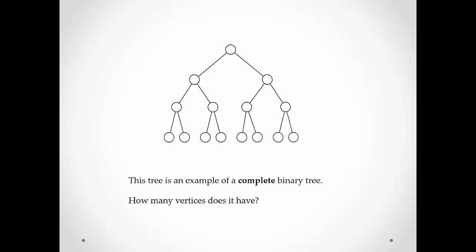Our next example is a complete binary tree. A complete binary tree is a binary tree where each vertex has exactly two children. In a binary tree you have at most two children, but if it's complete, then every vertex has two children, except of course for the leaf nodes. Starting at the top, we always have one root. Since each vertex has exactly two children, we have two at the first level, and each of those have exactly two, so we have two squared at the second level, and so forth.